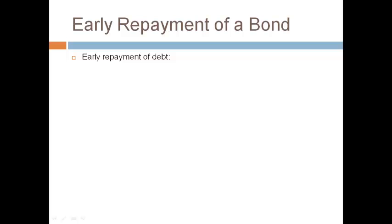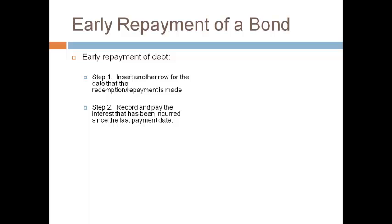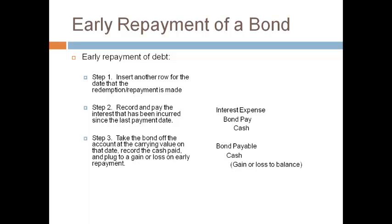A company may repay the debt early before the maturity date. A company will want to repay early if it can borrow again at a lower interest rate, while the investor may want early repayment if they can reinvest in a bond with a higher interest rate. The bond contract will state that the bond can be repaid early and who decides. The first step is to insert a row into the amortization table for the date the bond is repaid. The second step is to record interest expense and the cash to pay the interest up to that date. Cash is credited for the agreed-upon amount. The bond payable is debited for the amount in the carrying value column on the repayment date. A gain or loss is recorded to balance the entry — gains are credits, losses are debits. Repaying a bond early normally results in a gain or loss reported on the income statement.